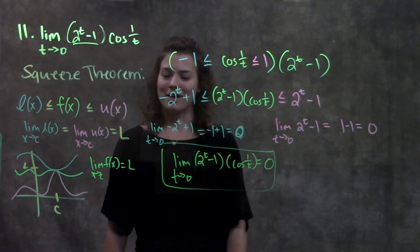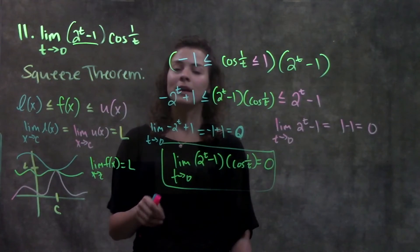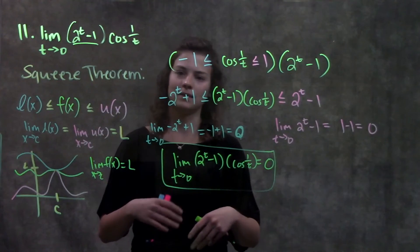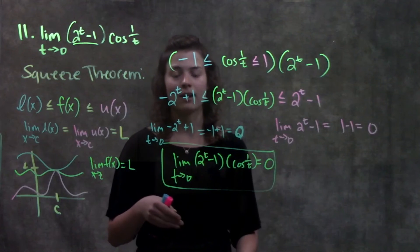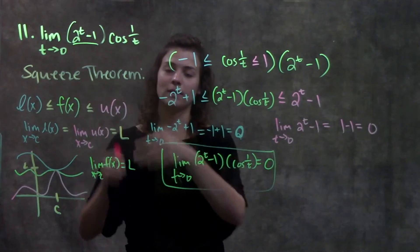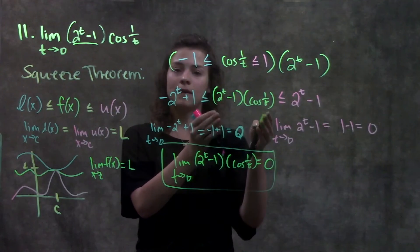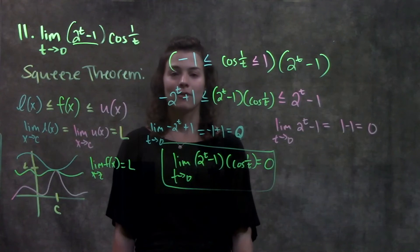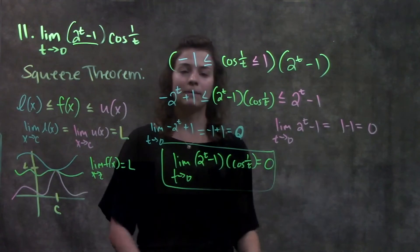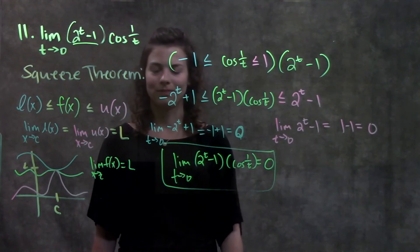That's it for this problem. To recap: when you have a squeeze theorem problem, first look for what part of the function has bounds — something that can't be more than a value or less than a value. Most of the time it will be a sine or cosine function, always bound by negative one and positive one. Then multiply through so the middle matches the function you started with. Finally, find the limit of both bounding functions; if they're equal, that is also the limit of your middle function. Here both bounds went to zero, so the answer is zero.